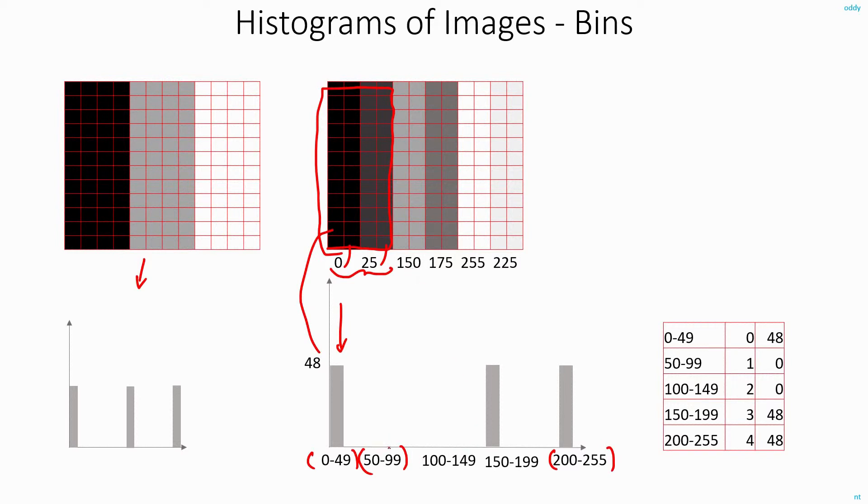And similarly, in the next bin 50 to 99, there are no pixels. So here, the value will be 0, 100 to 149, again the value will be 0, 150 to 199. Here I have this entire patch here, where the pixel intensity values are 150 and 175. So I'll take them together, which will come to again 48.